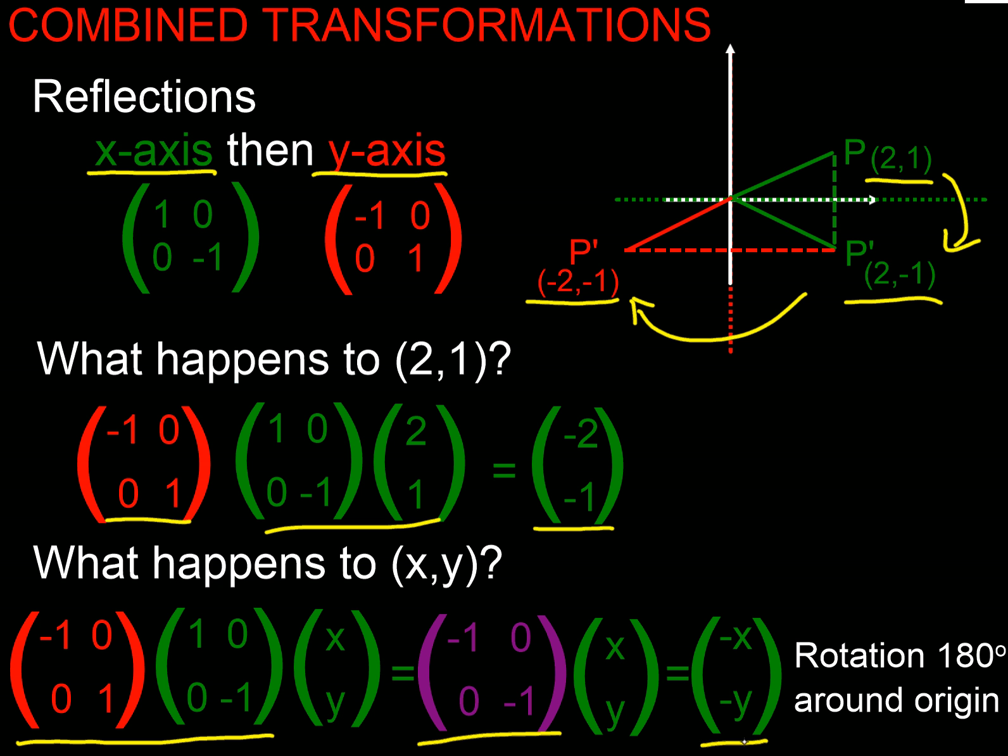Yep, so (2,1) went to (-2,-1). Now if you remember from what we did in GCSE, if we do these two reflections we actually end up with a rotation around the origin, don't we? And that's what we'd expect to see geometrically, and that's what we've got mathematically here, haven't we, because we've got -x, -y.